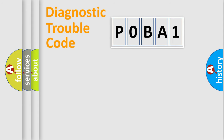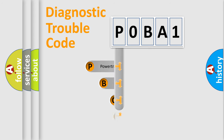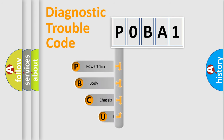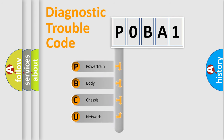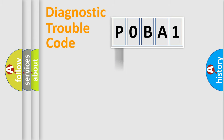First, let's look at the history of diagnostic fault code composition according to the OBD2 protocol, which is unified for all automakers since 2000. We divide the electric system of an automobile into four basic units: Powertrain, Body, Chassis, and Network. This distribution is defined in the first character of the code.